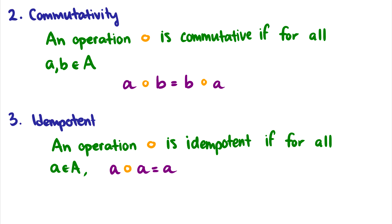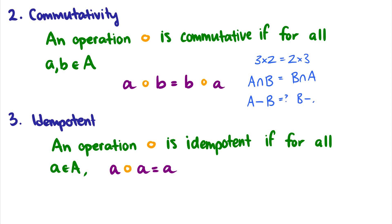Commutativity says an operation is commutative if for every a and b the order doesn't matter: a ∘ b = b ∘ a. For example, 3 × 2 = 2 × 3. In set theory, A ∩ B = B ∩ A, so intersection is commutative. But what about the difference operation? A − B is not equal to B − A — they give different sets. So the difference operator is not commutative.